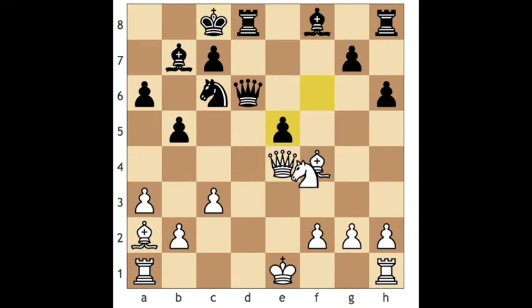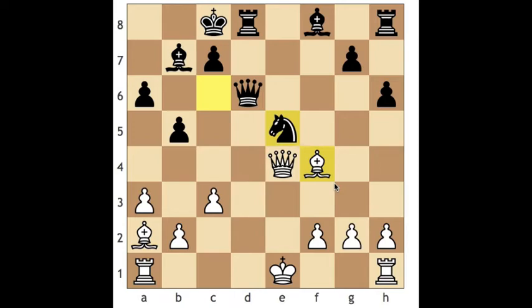So I start the exchange, and this is the critical point where I have to decide: do I take with the queen or do I take with the bishop? As we find out, I make the wrong decision here — I end up making a bad tactical move and I didn't quite calculate far enough into the future. I miscalculated by one step, and we'll see what happens. I go ahead and exchange with the bishop.